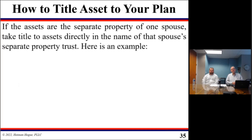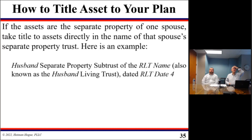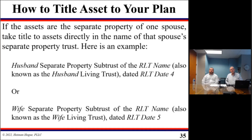Now, if the assets are the separate property of one spouse, take title to those assets directly in the name of that spouse's separate trust. For example: Husband Separate Property Subtrust of the RLT Name, also known as the Husband Living Trust, dated RLT date — or Wife Separate Property, similarly.